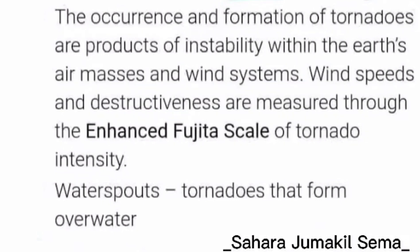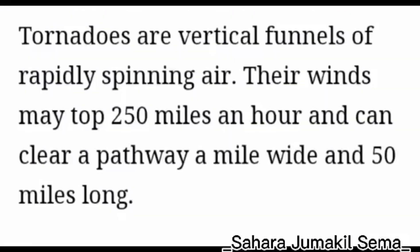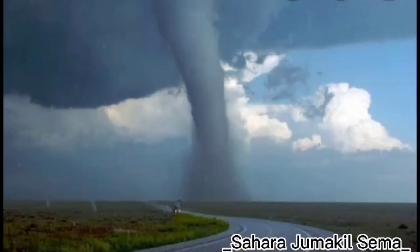The occurrence and formation of tornadoes are products of instability within the Earth's air masses and wind systems. Wind speeds and destructiveness are measured through the Enhanced Fujita Scale of tornado intensity. Waterspouts are tornadoes that form over water. A tornado is a violently rotating column of air in contact with both the surface of the Earth and a cumulonimbus cloud, or in rare cases the base of a cumulus cloud. Tornadoes are vertical funnels of rapidly spinning air with winds that may reach 50 miles per hour, capable of clearing a pathway a mile wide and 50 miles long.